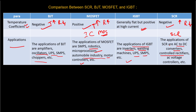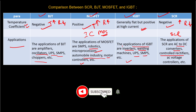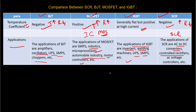So this was the major difference between BJT, MOSFET, IGBT, and SCR. I hope you found this video helpful and all your doubts are now clear. I will bring more videos for you, so stay tuned, keep watching, keep supporting — bye bye!